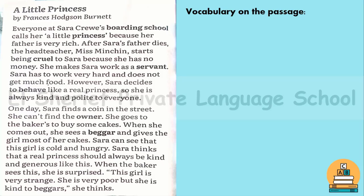However, Sara decides to behave like a real princess, so she is always kind and polite to everyone. One day Sara finds a coin in the street, can't find the owner, and goes to the baker's to buy some cakes. When she comes out, she sees a beggar girl and gives her most of her cakes. Sara thinks a real princess should always be kind and generous. The baker is surprised — this girl is very poor but kind to beggars.